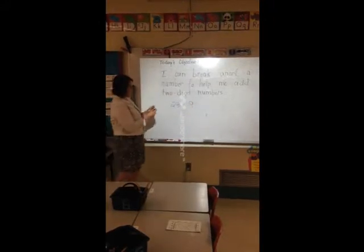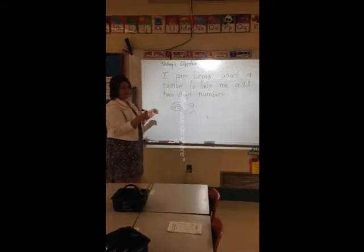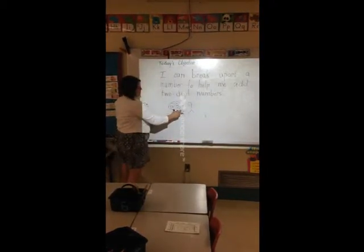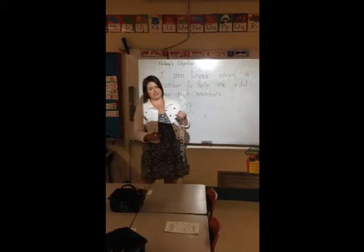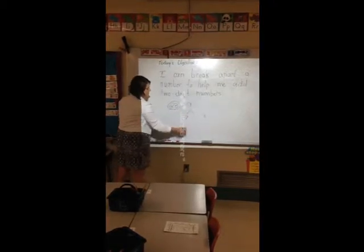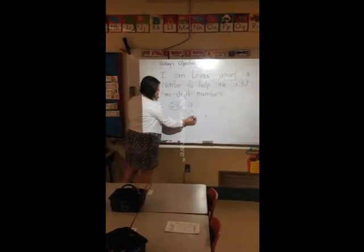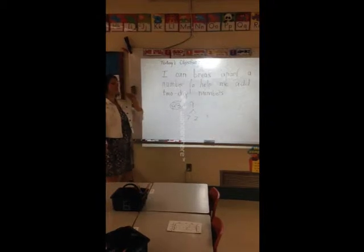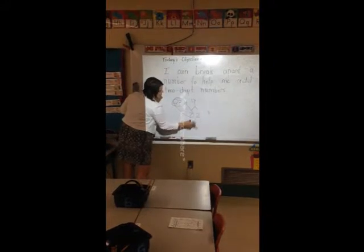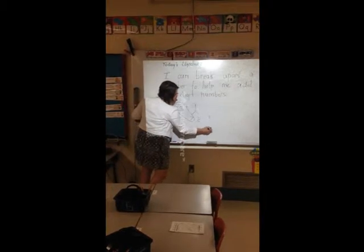We're going to break apart our nine to make 23 the next ten. Can anyone tell me what the next ten would be? Thirty. So how many more do I need to get to 30? Seven. So we're going to break apart our nine into a seven, and what plus seven gives us nine? Two. So in our brains we can use that seven plus twenty-three is thirty, and all we have to do now is add two more, which gives us thirty-two.